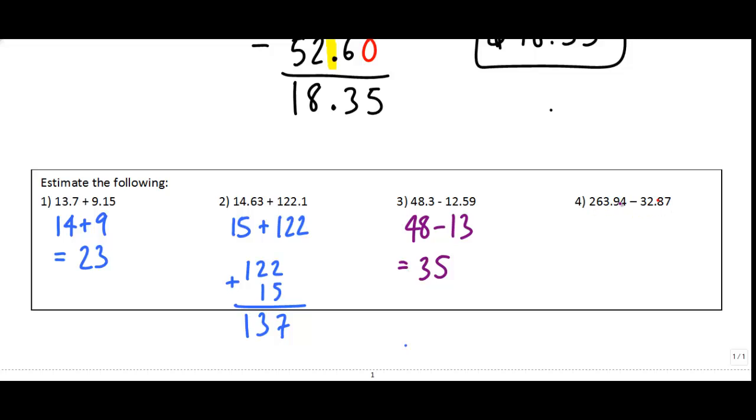And the last one here, 263.94. The next digit next to this 1's column is a 9, so I round up to 264. And I'm going to subtract from that 32.87. The next digit's an 8, which means I round up to 33. If you can't do that in your head, same thing. 264 minus 33. Just line it up like you've been taught previously. 4 minus 3 is 1. 6 minus 3 is 3. 2 minus nothing is 2. And there's your answer.